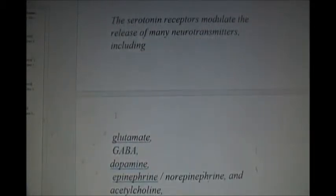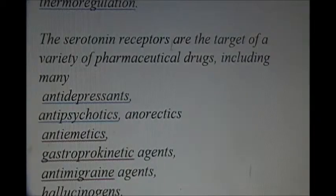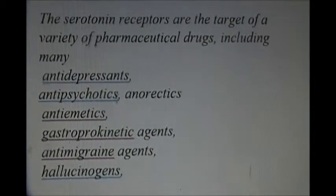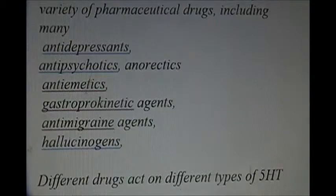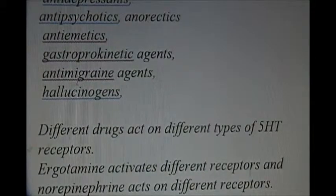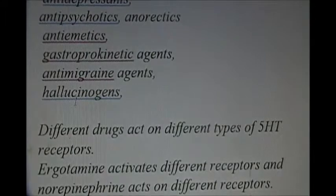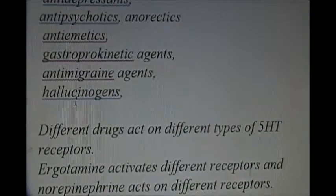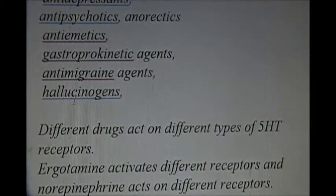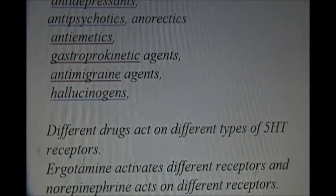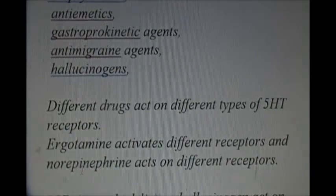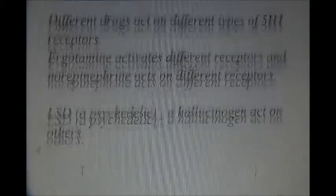These serotonin receptors are the target of variety of drugs including antidepressants, antipsychotics, antiemetics, antimigraine and hallucinogens. Different drugs act on different types of 5-HT receptors and there are many types of serotonin receptors. For example, ergot activates different types of 5-HT receptors and norepinephrine act on different receptors so the effect is different. Whereas LSD, a psychedelic, acts as a hallucinogen acting on others.